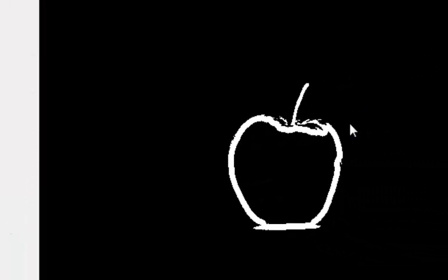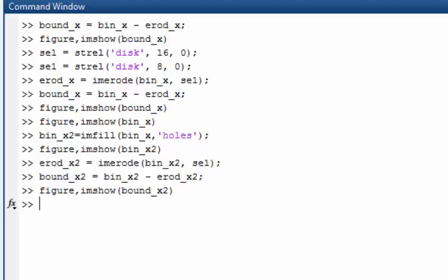Displaying boundary_x2, you will notice that you get only the outer boundary of the apple. That's the way of creating the outer boundary. If you want to display this image side by side with your original color image, you can use the imshowpair function.